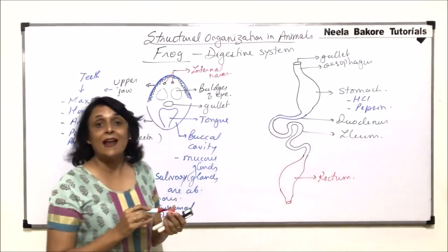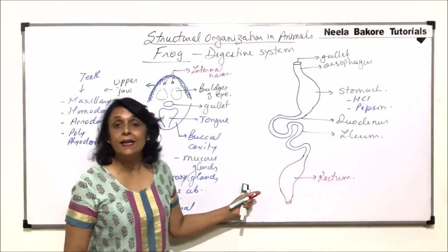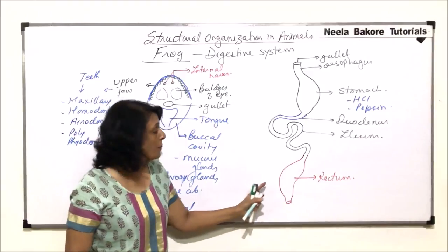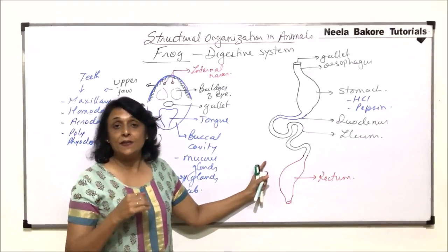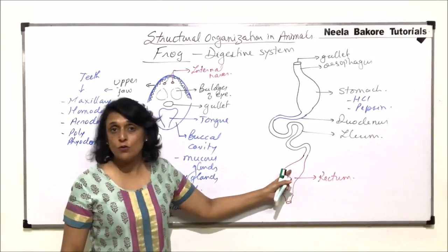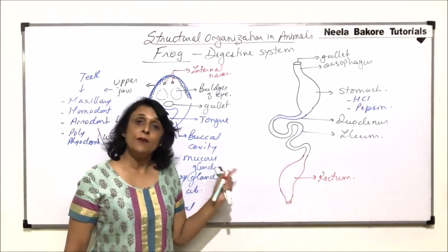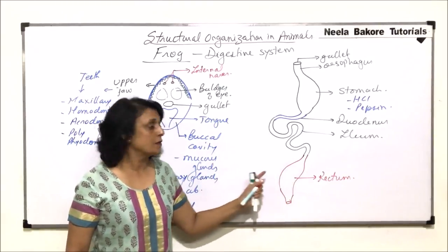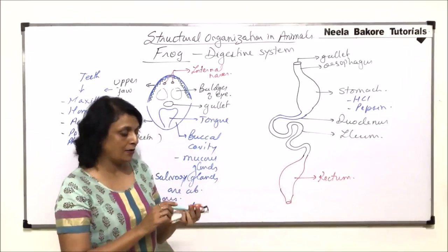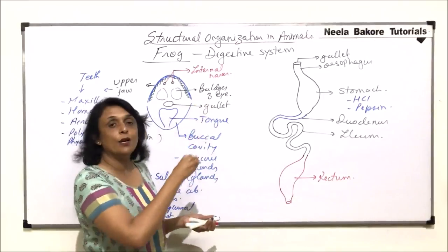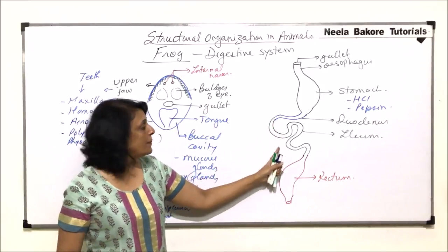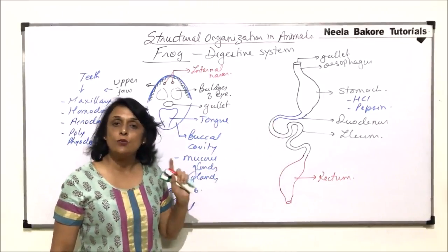In the rectum, two more systems open into it. From the excretory system, waste from the kidneys comes here, and from the reproductive system, gametes also come here. Small intestine has duodenum and ileum; large intestine has only the rectum.